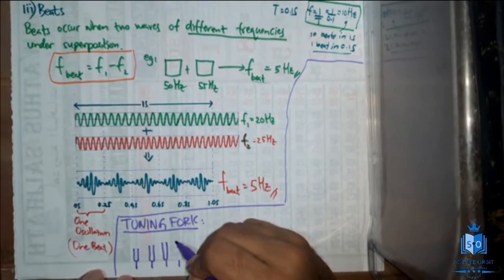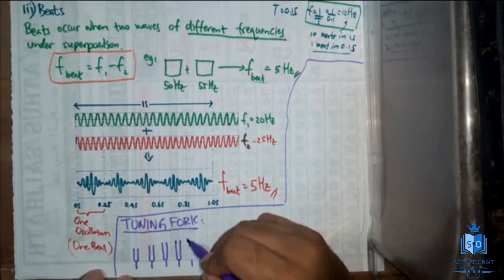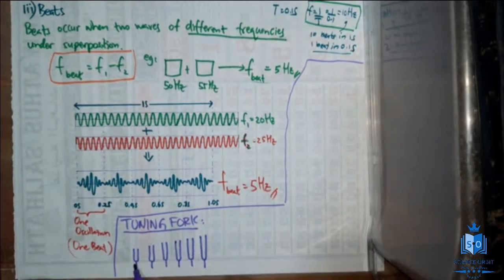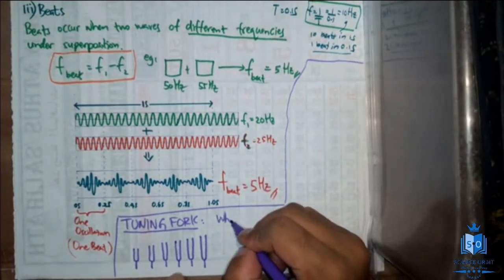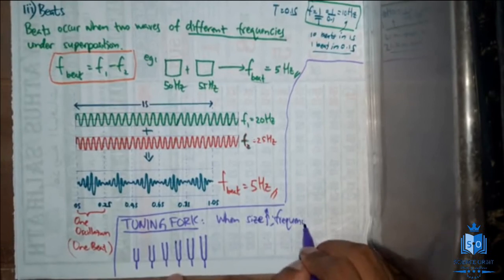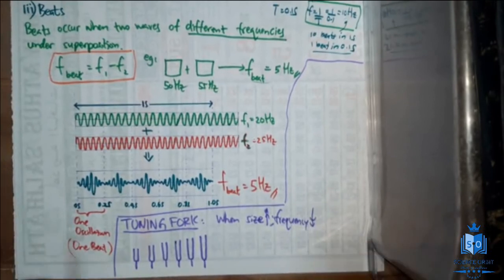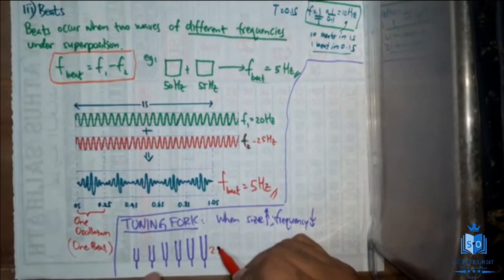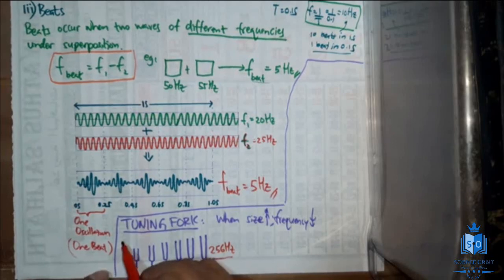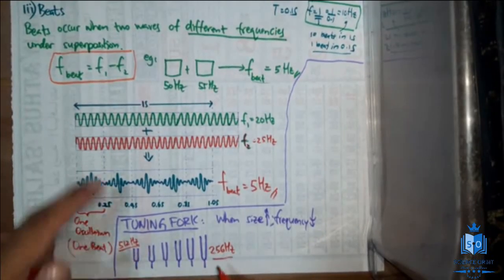This is how the tuning forks are arranged in the laboratory — the handle length does not change but the prong length will change. When the size of the tuning fork increases, the frequency decreases. The tuning fork with the lowest frequency — the largest one normally in labs — is 256 hertz, and the smallest tuning fork with the highest frequency is 512 hertz. Larger size means smaller frequency; smaller size means larger frequency.